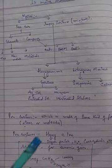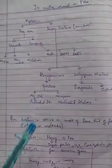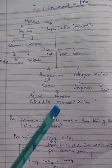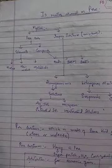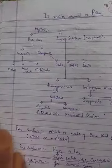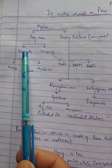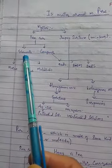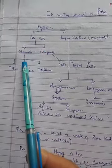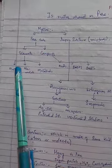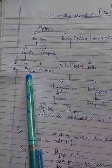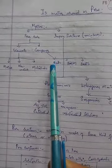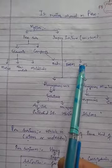In chemistry, a pure substance is that substance which is made up of only the same kind of particles — only one kind of particles. These pure substances are classified into elements and compounds. Elements are again classified into metals, non-metals, and metalloids. Compounds are classified into acids, bases, and salts.